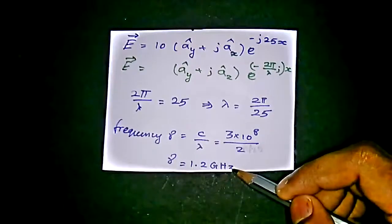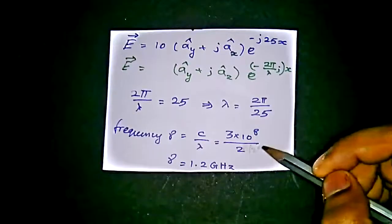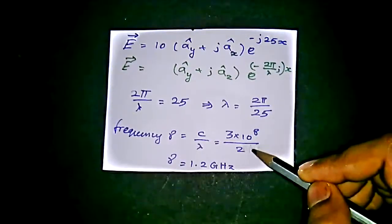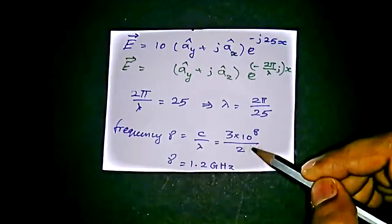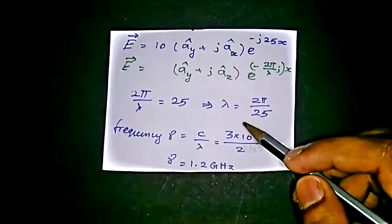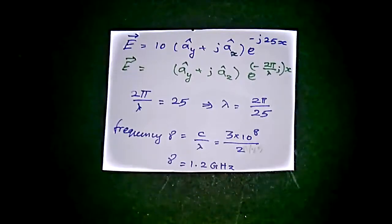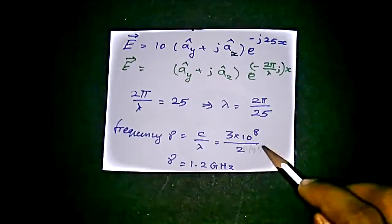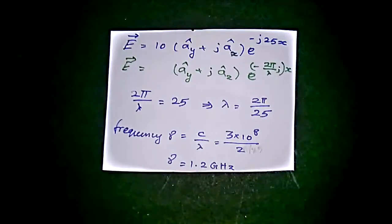We get the value of frequency as 1.2 GHz. The 25 goes to the numerator, giving 75 divided by 2, which is 37.5. Then 37.5 divided by π gives 1.2, and the 10⁸ becomes 10⁶ after adjusting the decimal, giving us 1.2 GHz.